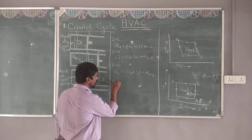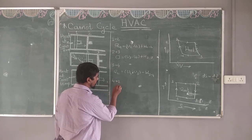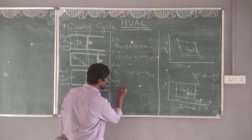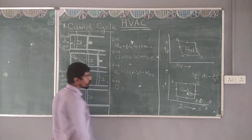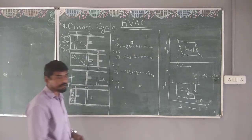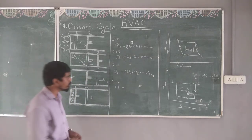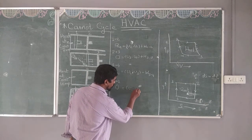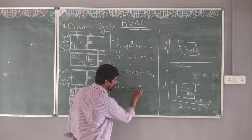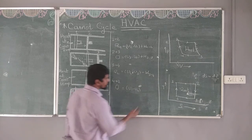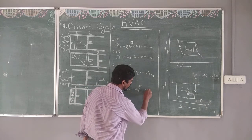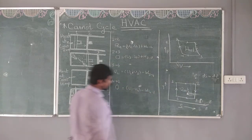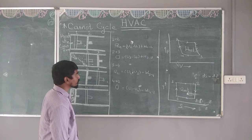For process 4 to 1, there is zero heat exchange during the reversible adiabatic process: 0 = (U1 − U4) − W₄₁.